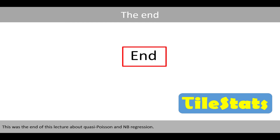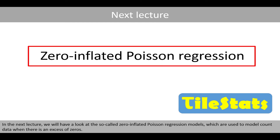This was the end of this lecture about quasi-Poisson and negative binomial regression. In the next lecture, we'll have a look at the so-called zero-inflated Poisson regression models, which are used to model count data when there is an excess of zeros.